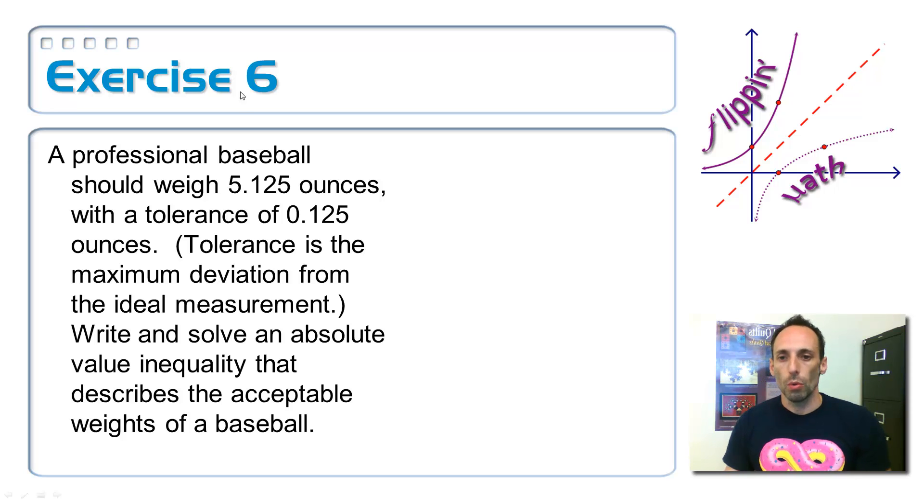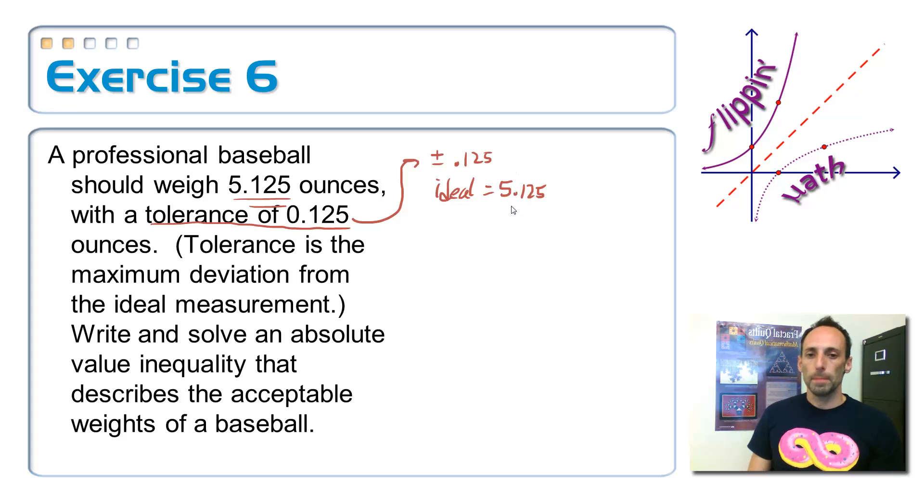All right, so what I'm going to say on this is, well, let's just start writing things and see what we come up with. First of all, let's take this tolerance thing. This tolerance means that I can be plus or minus, I can go above or beyond the ideal weight of 0.125. And that ideal weight, the ideal weight for the baseball, is how much? That's that 5.125, 5.125.